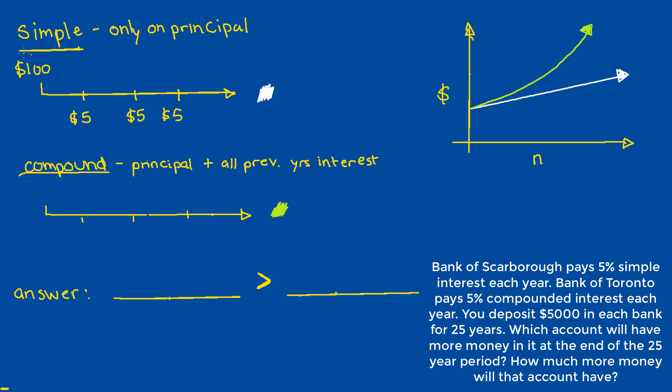That's because each year, I am just getting 5% of the principal. In a compound interest account, if I were to invest $100 and got 5% annually, in the first year, I would get $5, same as the simple interest account.